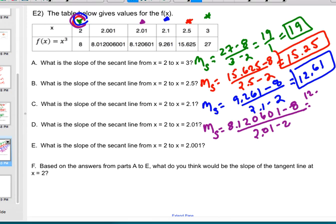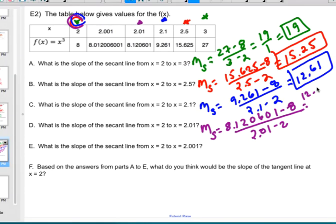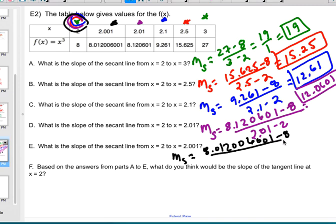So I get that this is 12.0601. Now let's loop back around, it was black for this one. So we'll use last one here. So my secant slope for this one should be this ridiculously large number, 8.012006001 minus 8 over 2.001 minus 2.